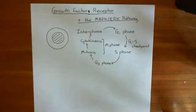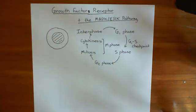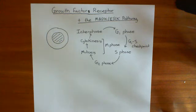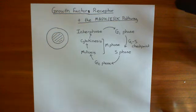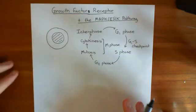So if we want a cell to undergo the cell cycle and divide in two, we somehow need to get it to go from the quiescent interphase into G1, making loads of proteins important in DNA replication. We've seen one way — through the Wnt/beta-catenin pathway — but now we're going to see another way, which is through growth factors and growth factor receptors.